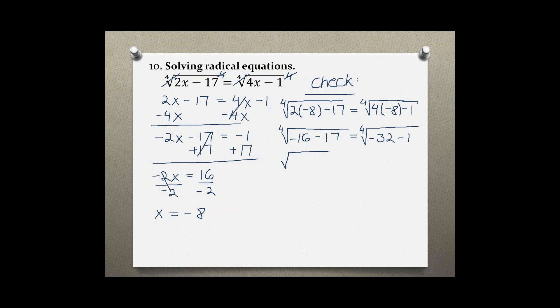The 4th root of negative 16 minus 17 is negative 33, and on the right side negative 32 minus 1 is negative 33. So even though this problem checks out,